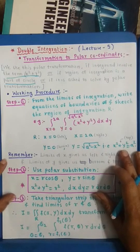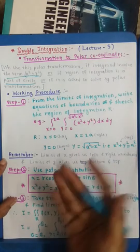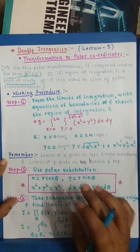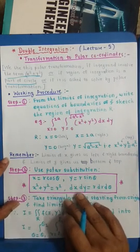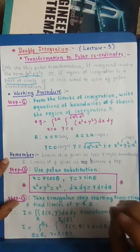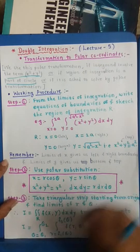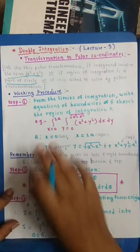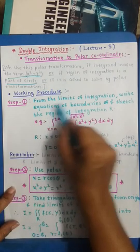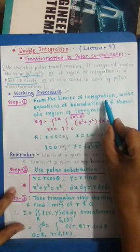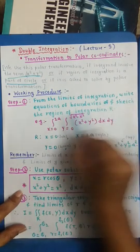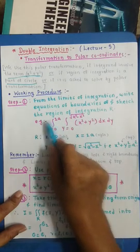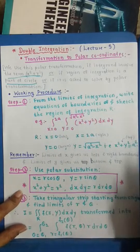Let me explain the working procedure of transformation into polar coordinates. There are three steps. In the first step, from the limits of the given integration we write the equation of boundaries and we sketch the region of integration R.